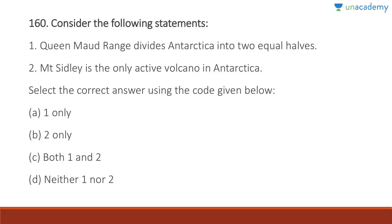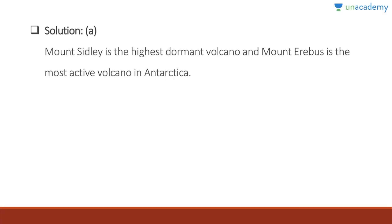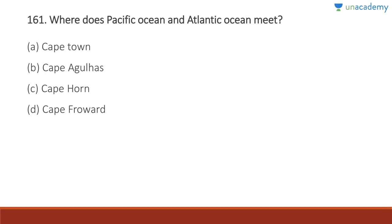Question 160: Queen Maud Range divides Antarctica into two equal halves — correct. Mount Sidley is the only active volcano in Antarctica — wrong. Mount Sidley is the highest dormant volcano; Mount Erebus is the most active volcano in Antarctica. Answer is A, one only.